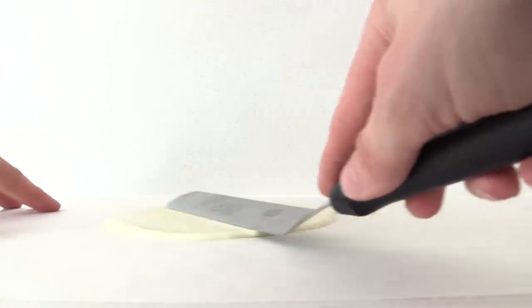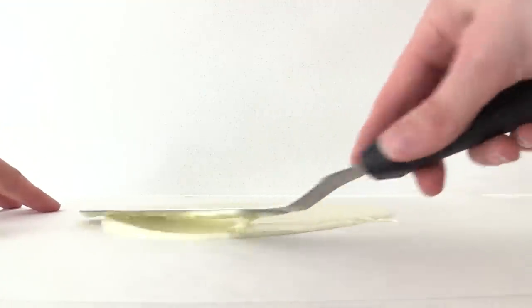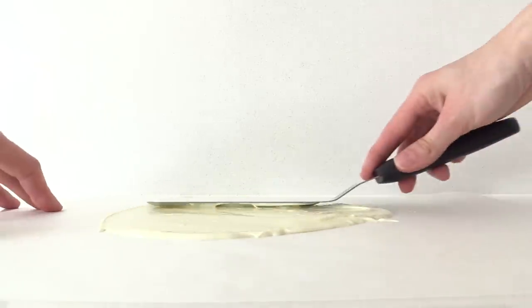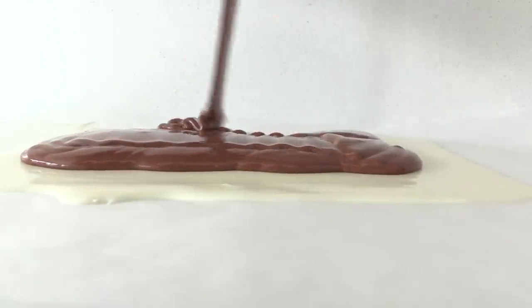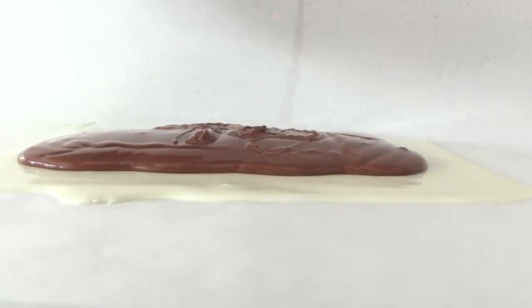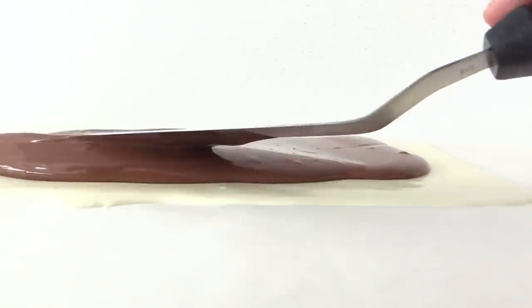What you need to do is spread out some tempered white chocolate onto some non-stick baking paper in a thin, smooth layer. Then let that set and once it's firm pour over some tempered milk chocolate and spread it out in an even layer over the top.